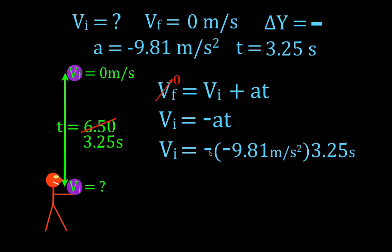The initial velocity is equal to minus, minus 9.81. You'll see that a minus times a minus is a plus. My initial velocity has to be positive because going up, that's the positive direction. Times the time is not 6.5. Remember, it's 3.25.